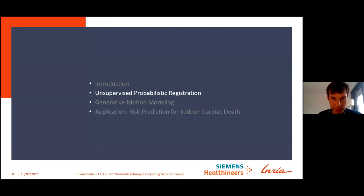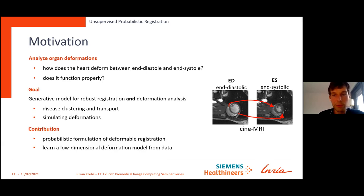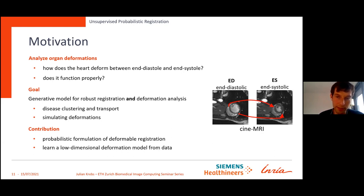Let's start with the probabilistic registration model. We want to register the heart from end-diastole to end-systole and answer questions like: does it beat normally? Is the contraction normal? Is the patient healthy? For this, we not only want to register it, but also have some kind of model that allows us to analyze the deformation — for example, cluster deformations into diseases and even transport the transformation from one patient to another. The contribution is this probabilistic formulation of deformable registration, where we learn a low-dimensional deformation model for image pairs.